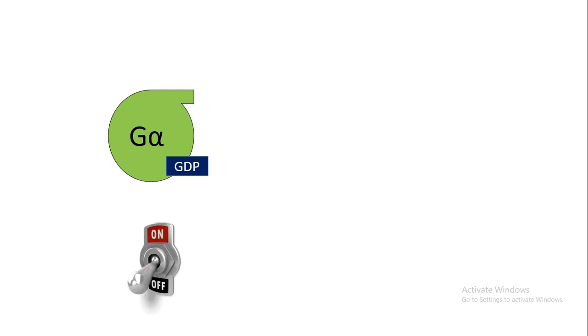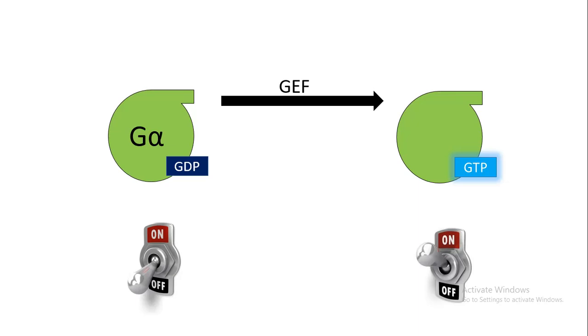But from the off situation, nucleotide exchange factors can change their configuration and exchange GTP, thereby activating them. GTP bound G protein is activated, whereas GTPase activating protein, or GAPs, can switch off these G proteins.